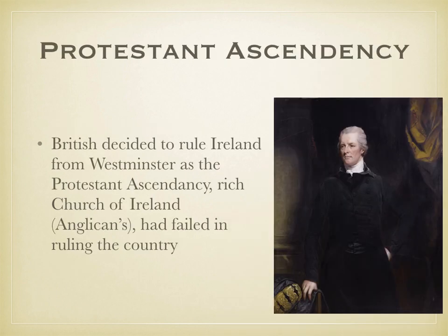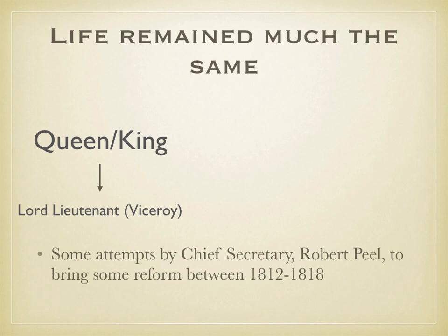The Act of Union was brought in because the British felt that the Protestant Ascendancy — the wealthy Church of Ireland or Anglican nobles who lived in Ireland and dominated the political, social, and economic life in Ireland — had failed in ruling the country. However, after the Act of Union, life stayed much the same for the Protestant Ascendancy.